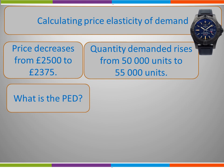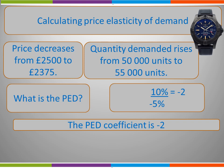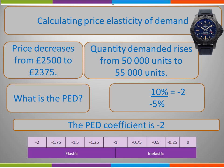Let's look at a second numerical example. Here we have an expensive men's watch. The price is going to decrease from £2,500 to £2,375. As a result of the fall in price, the quantity demanded is going to rise from 50,000 units to 55,000 units. So what is the PED? Why not pause the video whilst you carry out this calculation? You should have worked out that the price elasticity of demand is minus 2. The percentage change in quantity demanded was 10%, and the percentage change in price was minus 5%. This gave us the PED coefficient of minus 2. This shows us that our expensive men's watch has an elasticity of minus 2 and is therefore elastic.